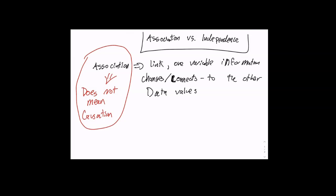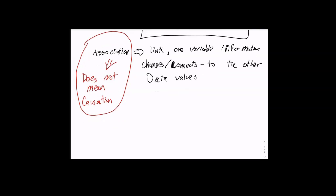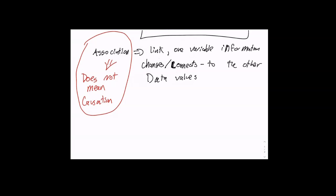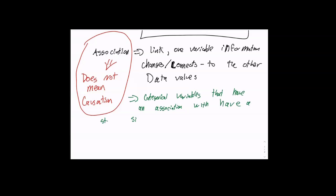There's a connection typically for the general population. So association — for our purposes here — means that categorical variables with an association will have a statistically significant distribution. This is what I was referring to yesterday. I said 57% and 50% — is that the same?